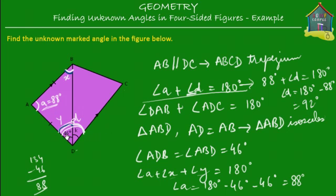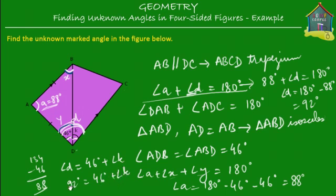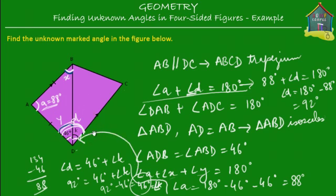So angle D, which is made up of the given 46 degrees plus this little angle K, is equal to 92 degrees together. So we substitute: K equals 92 minus 46, which equals 46 degrees. So this angle K is equal to 46 degrees — and that's your answer.